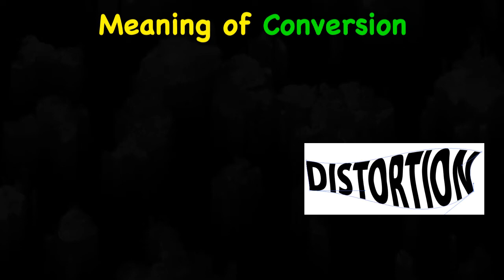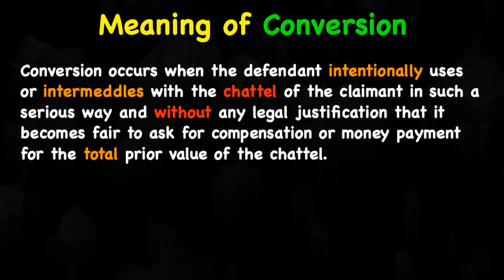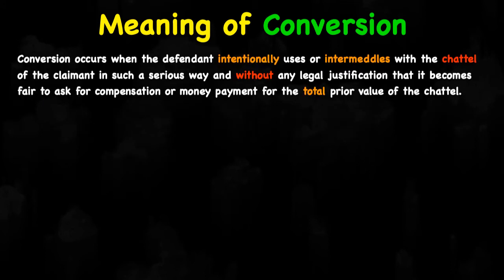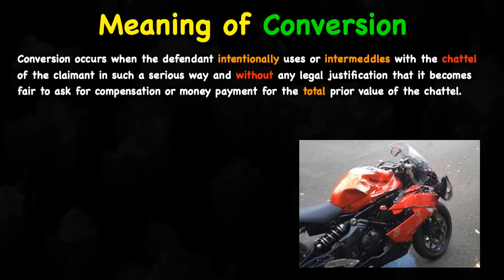Now let us check out what is the legal meaning. Conversion occurs when the defendant intentionally uses or intermeddals with the chattel of the claimant in such a serious way and without any legal justification, that it becomes fair to ask for compensation or money payment for the total prior value of the chattel. For example, if you used someone else's bike without his permission and you damage it, then whatever the prior value of that bike — say it is 60,000 — then you have to pay 60,000, that is the prior value, not the present value.